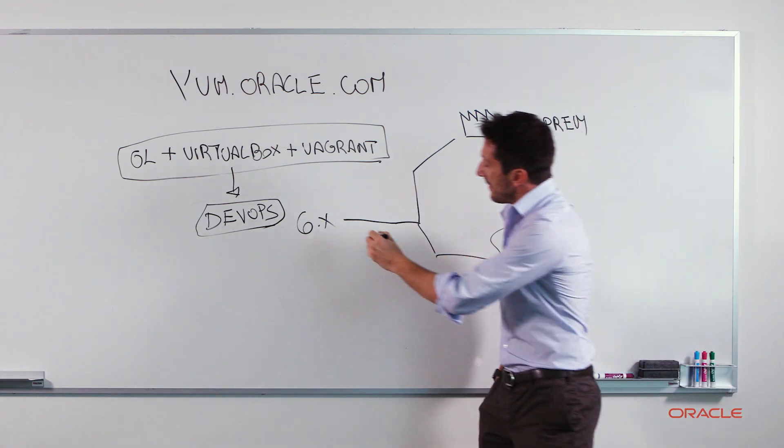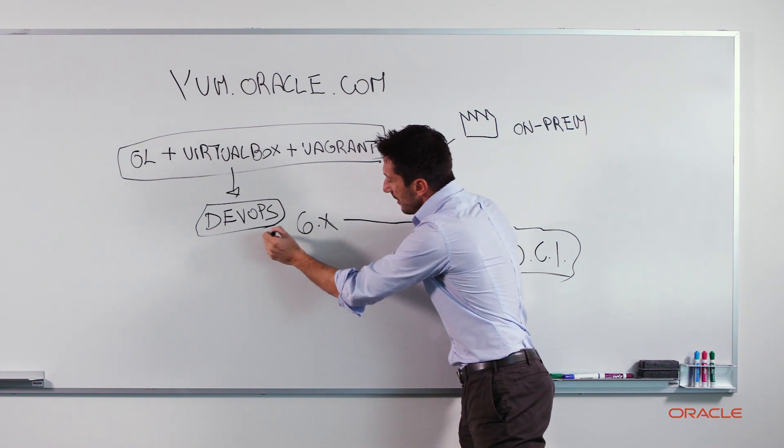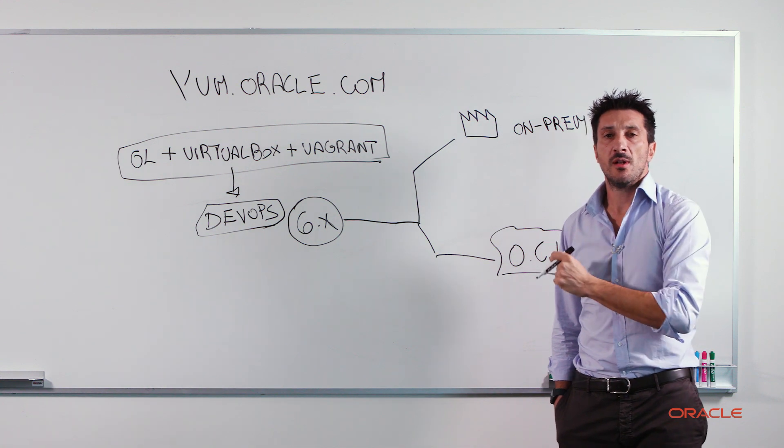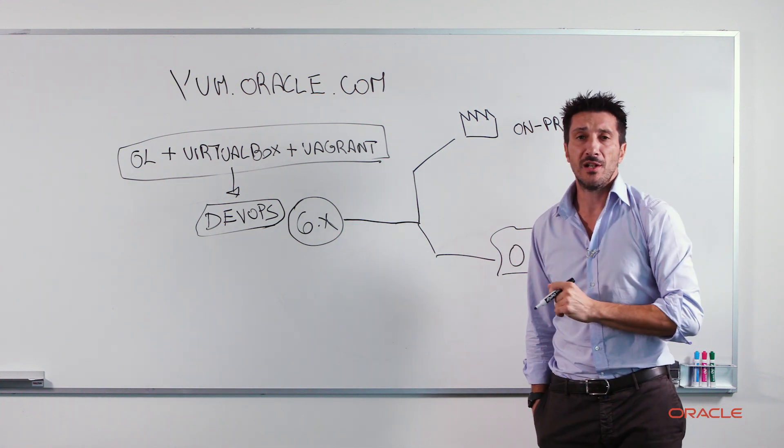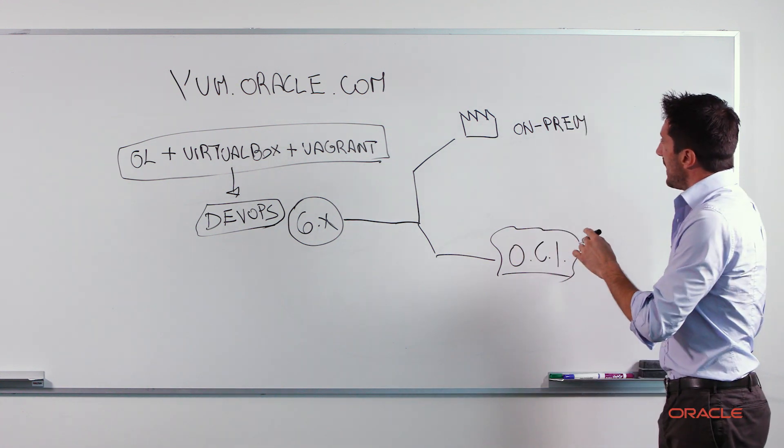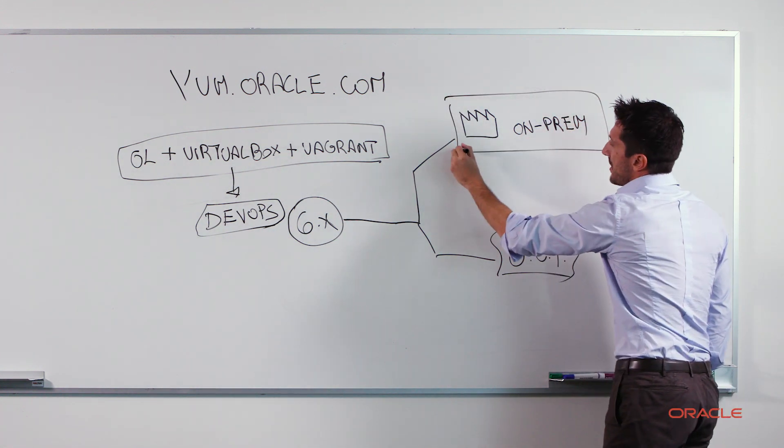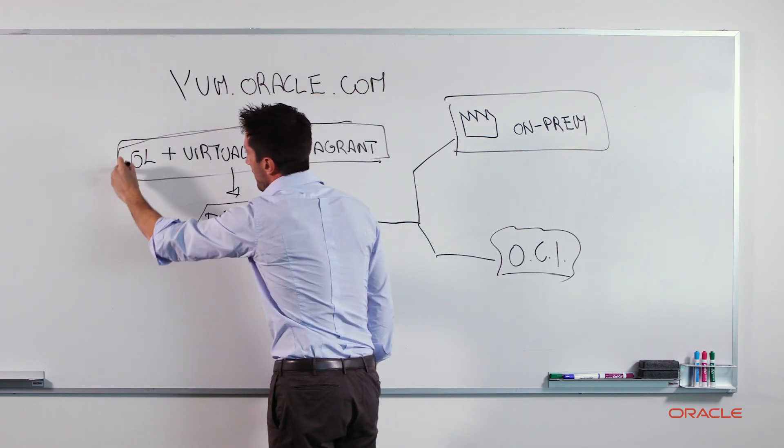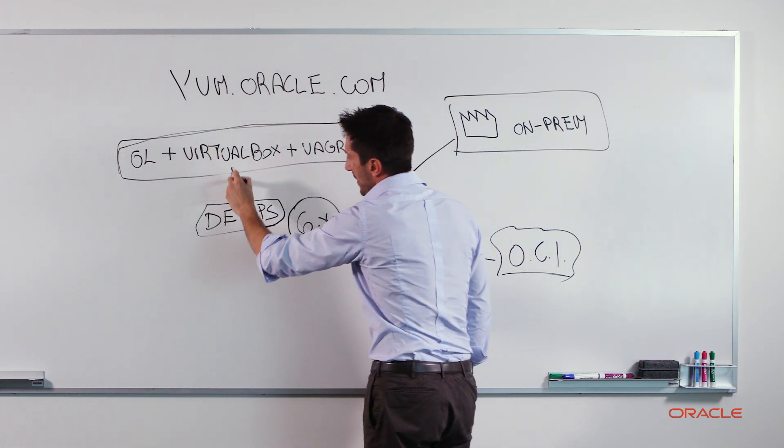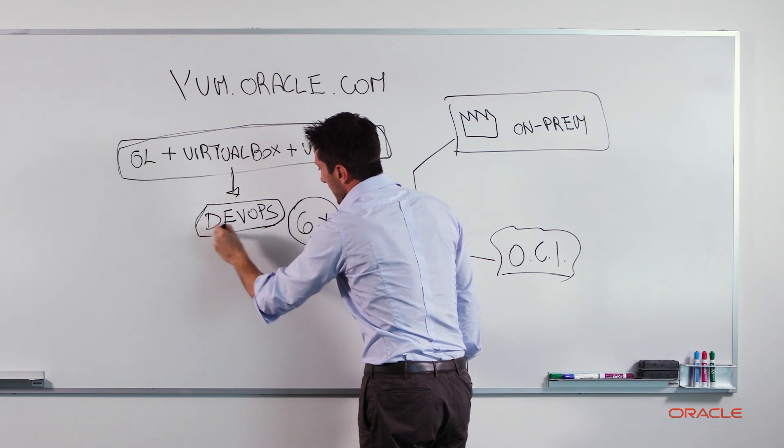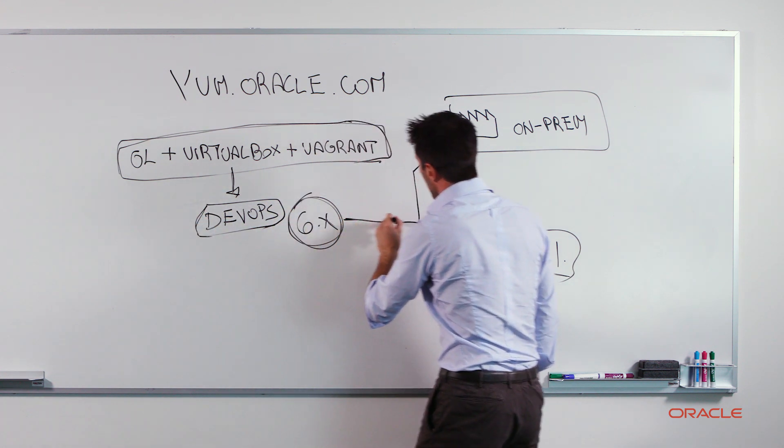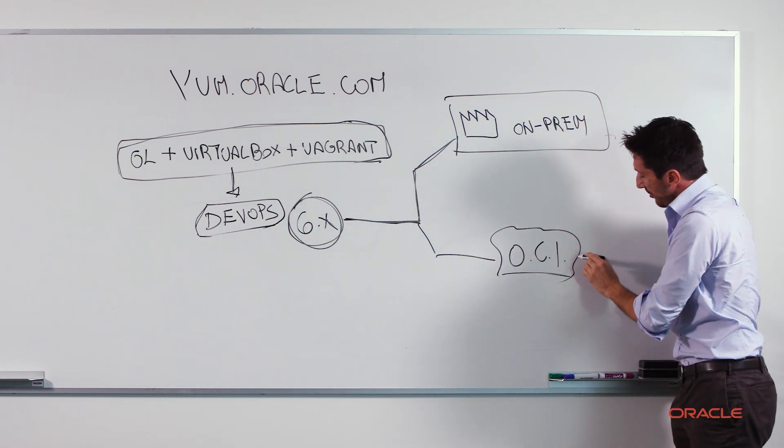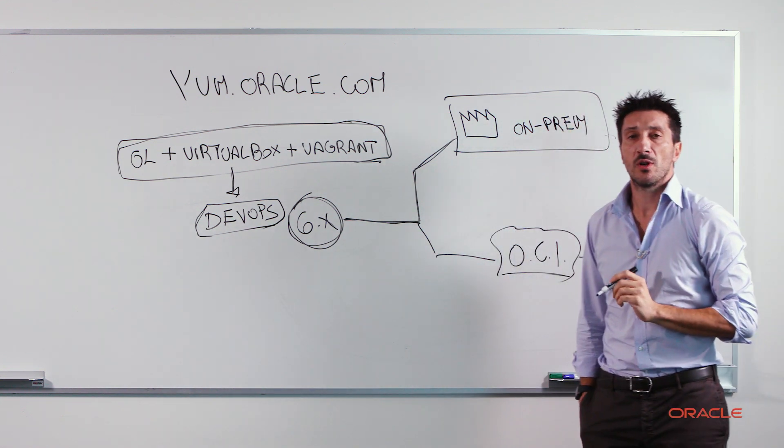And the cool point is that the migration or the moving from your local VirtualBox VM to the cloud can be easily managed by four or five clicks on your own laptop. So just to give you a quick recap, we worked to automate the build of your development environment. We worked to easily get your development environment moved or cloned to your production environment running on-premise or your production environment running on Oracle Cloud Infrastructure.